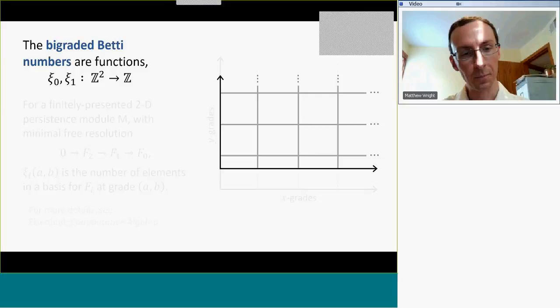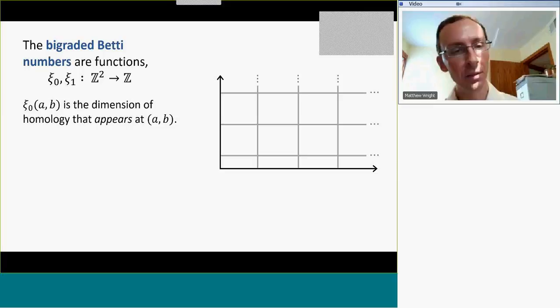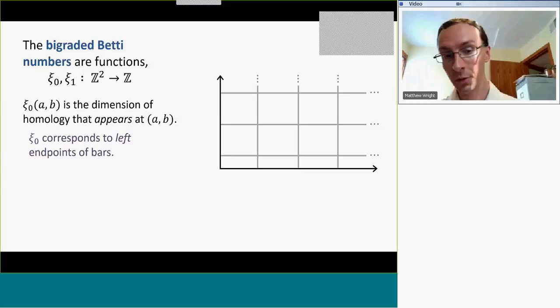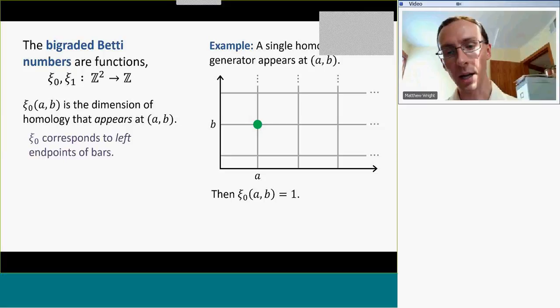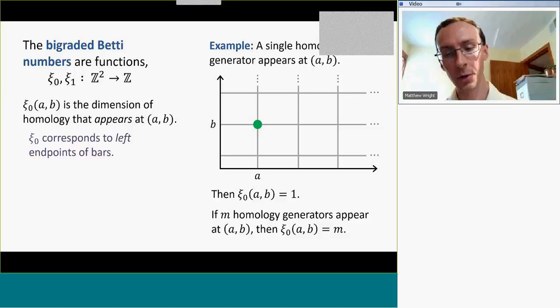For example, ξ₀ at grade (A,B) is the dimension of homology that appears — that is born — at grade (A,B). This should correspond to the left endpoints of bars, where bars begin. Since I have in my 2D module a single homology generator, ξ₀ equals 1 at this point, and I'm going to visualize that by drawing a dot — a green dot at this point — which indicates that ξ₀ is 1 at that point. If m homology generators appear at grade (A,B), then ξ₀ at this grade would be m.